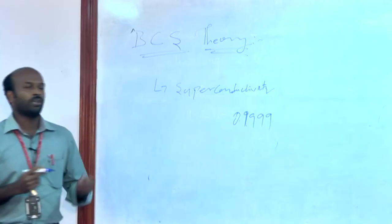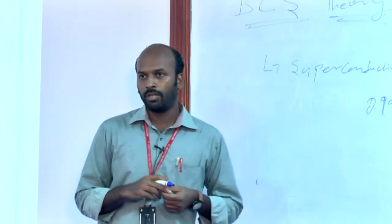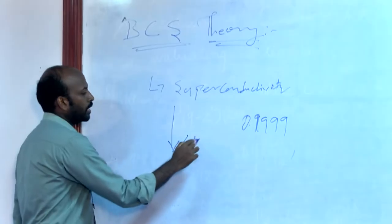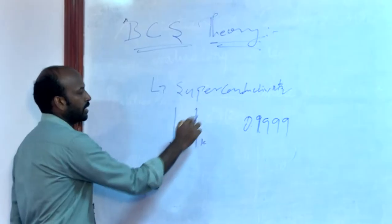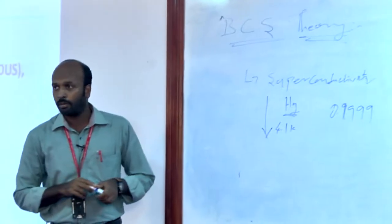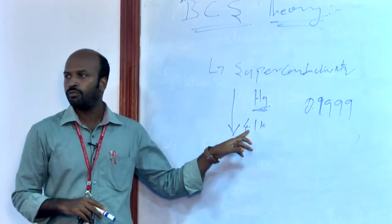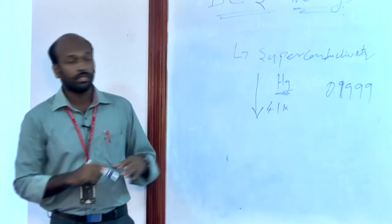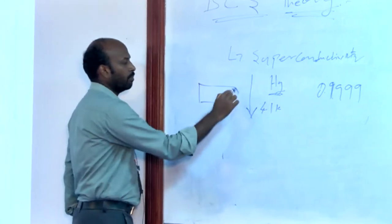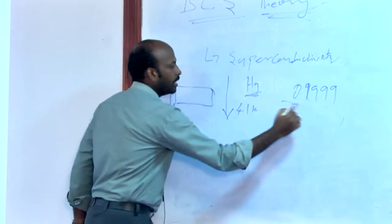How can we attain superconductivity? If you reduce the temperature beyond a critical temperature — for example, if you take mercury, when you reduce the temperature beyond 4.1 Kelvin, what happens is the total resistivity of that particular material is almost nearly equal to zero.